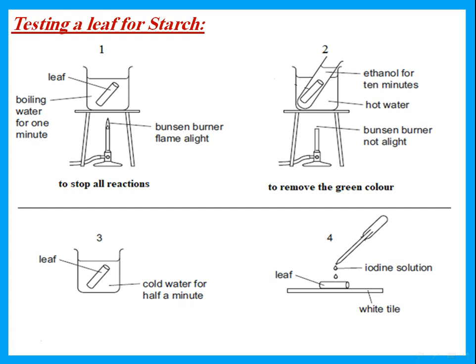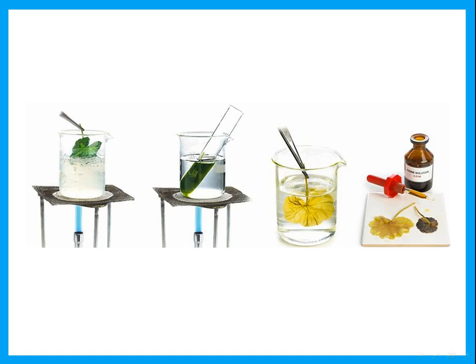The first thing we do is put the leaf in boiling water — this is to stop all reactions and break down the cell wall so it's easier to test. Then we put it in ethanol to remove the green color, because the green color of chlorophyll dissolves in ethanol, leaving the leaf white. Then we take this leaf and put it in cold water to soften it. Then we test the leaf using iodine solution — iodine solution reacts with starch to give a dark blue-black color.